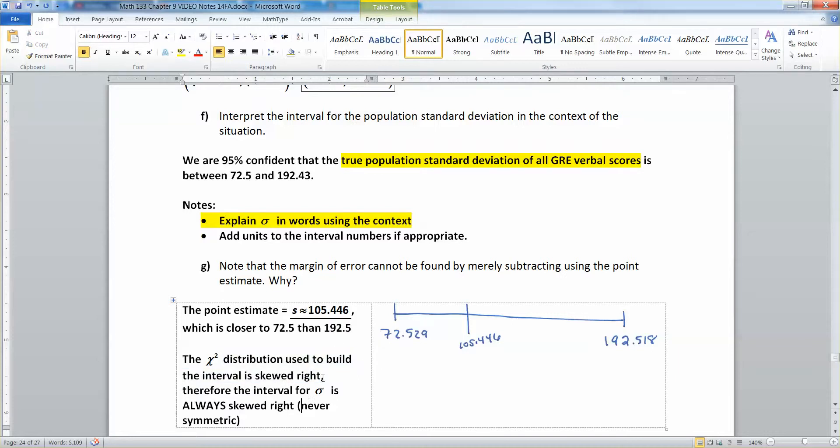Chi-square distributions are always skewed right. They're not symmetrical, right? Not symmetric like the Z and the T are. The Z distribution, T distribution, they're symmetrical. The chi-square, not so much. And that means that your interval is always skewed right. It's never symmetric.